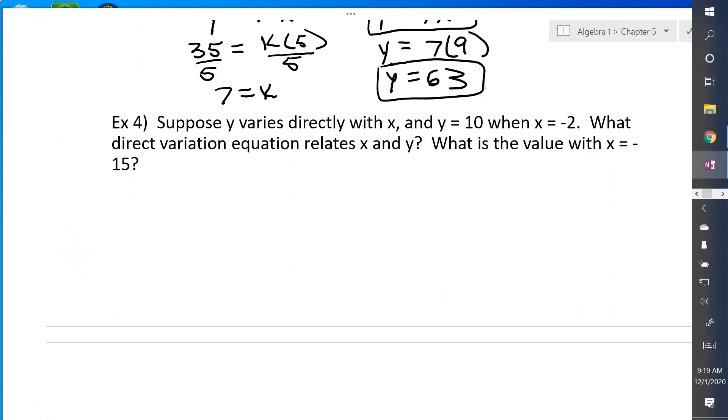We're going to do the same thing. Y varies directly with x. So y equals kx. And I want you to pause the video right here and see if you can figure out what k equals. Okay, so hopefully you said that 10 equals k times negative 2. And then when you solve for k, you get k equals negative 5. So then your equation should be y equals negative 5x. And then find the value when x equals negative 15. Y equals negative 5 times negative 15, and you should get 75.